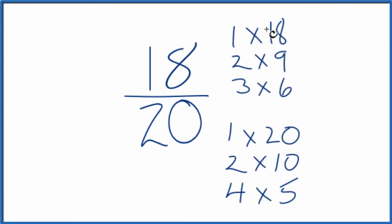When I look at the factors for 18 and 20, I'm looking for the greatest common factor. It looks like 2 is the greatest common factor. So we'll divide 18 by 2 and 20 by 2, and we'll have simplified or reduced the fraction 18/20.